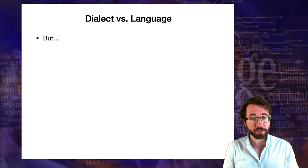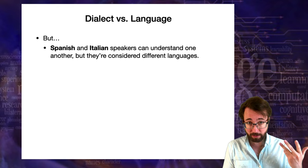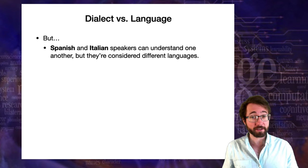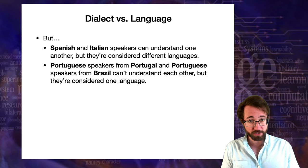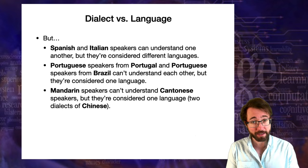Here are some complicated situations. Spanish and Italian speakers can typically understand one another — if you speak Spanish well, you can understand Italian at least 95% — yet these are considered different languages. Going the other direction, Portuguese speakers from Portugal and Portuguese speakers from Brazil typically cannot understand one another, yet these are considered two dialects of the same language. Similarly, Mandarin speakers typically cannot understand spoken Cantonese, yet they're considered two dialects of Chinese.